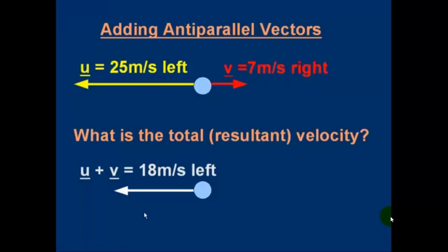Let's go over the answer. First of all, the answer is U plus V is 18 meters per second to the left. There are different ways to think about this. One way is because the vectors are in opposite directions. The 7 meters per second partly cancels some of the 25 meters per second to the left. In fact, it cancels out 7 of those 25, leaving 18 meters per second to the left. That's one way, a fairly intuitive way of thinking about it.